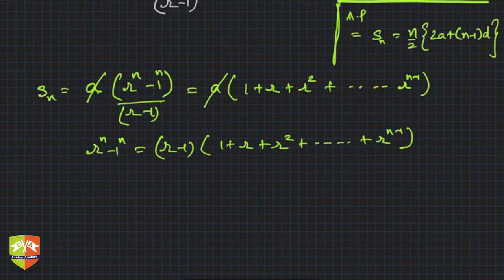When n is equal to 2 you learnt in ninth grade: r² - 1 = (r-1)(r+1) or (r-1)(1+r). Correct? 1 to the power n would be 1. I'm just trying to express it like this.